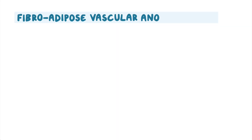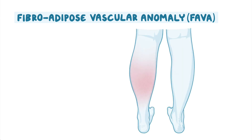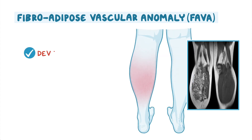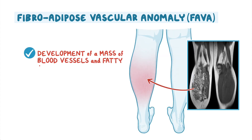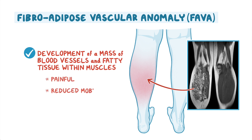Fibroadipose vascular anomaly, or FAVA, is characterized by the development of a mass of blood vessels and fatty tissue within muscles, which can be painful and reduce mobility.